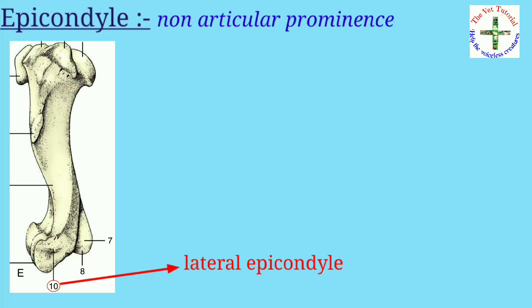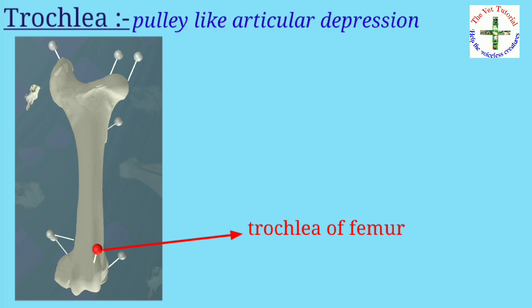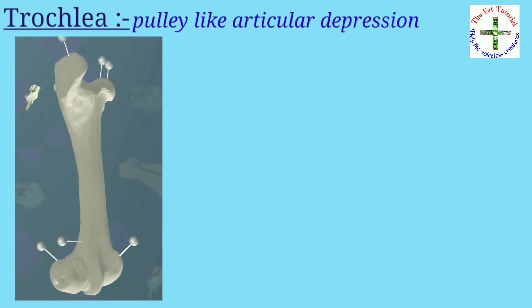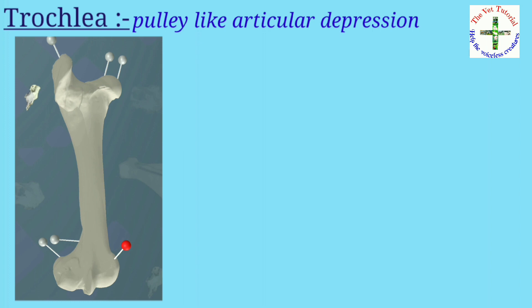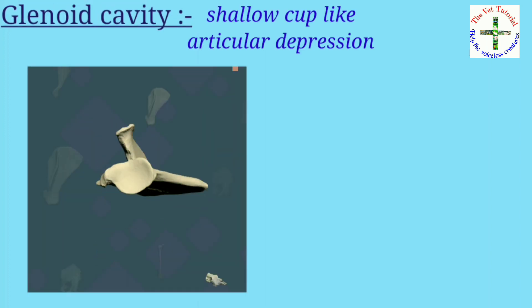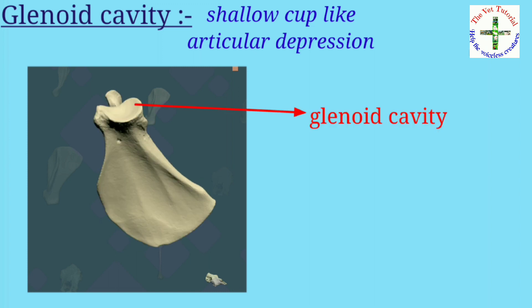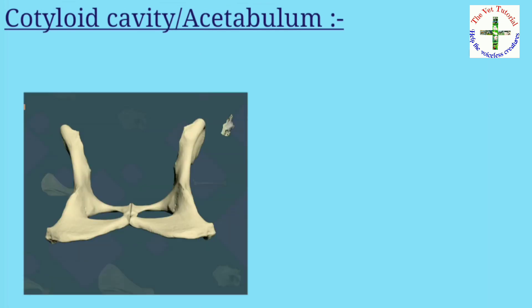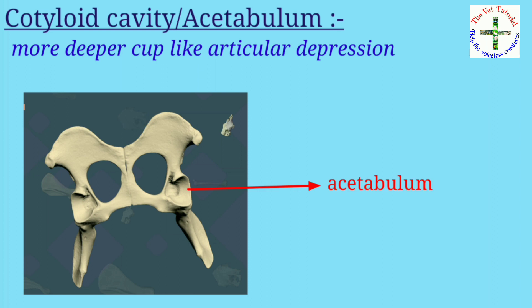Then epicondyle — it is a non-articular prominence associated with the condyle. Example: found in humerus. Then trochlear — it is a pulley-like articular depression. Example: found in humerus and femur. Then glenoid cavity — it is a shallow cup-like articular depression. Example: found in scapula.